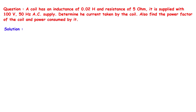If you find this video helpful, feel free to donate whatever amount you can — the link is in the description below. A coil has an inductance of 0.02 Henry and resistance of 5 Ohm. It is supplied with 100V 50Hz AC supply. Determine the current taken by the coil, the power factor of the coil, and the power consumed by it.